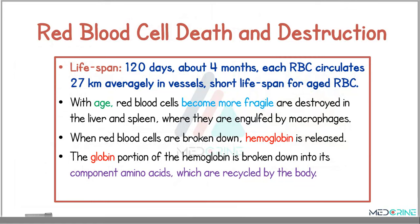The lifespan of a red blood cell is approximately 120 days — about four months — and each red blood cell circulates approximately 27 kilometers on average in the blood vessels. With age, red blood cells become more fragile and are destroyed in the liver and the spleen, where they are engulfed by macrophages. When red blood cells are broken down, the hemoglobin is released, and the globin portion is broken down into its component amino acids, which are then recycled by the body.